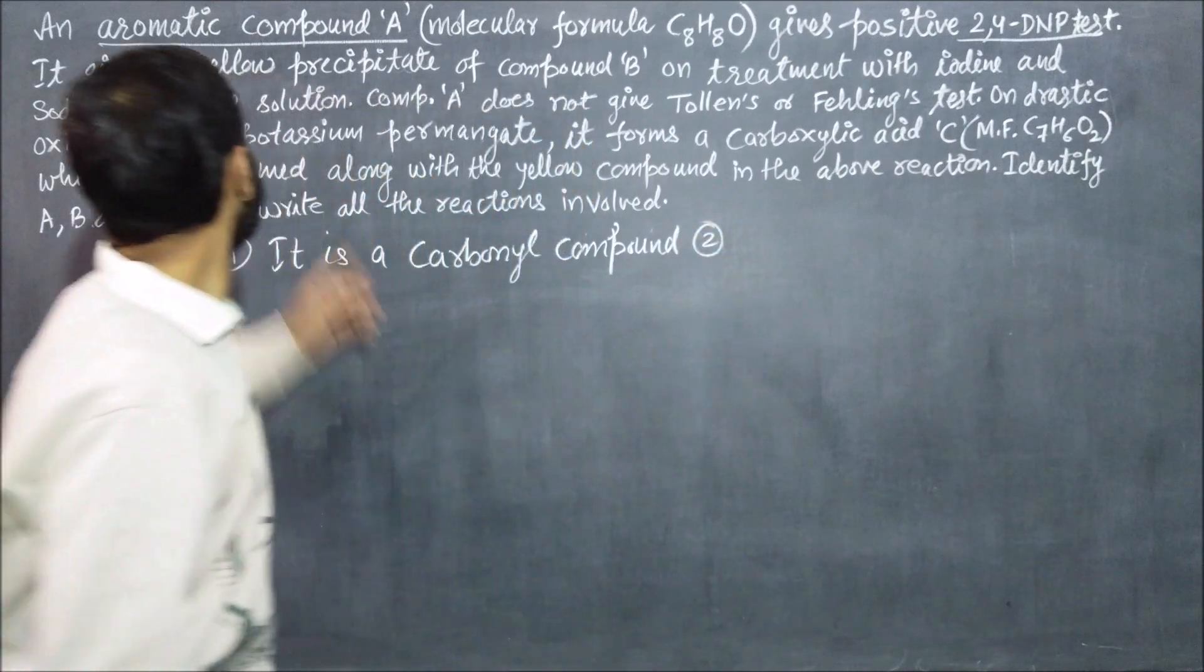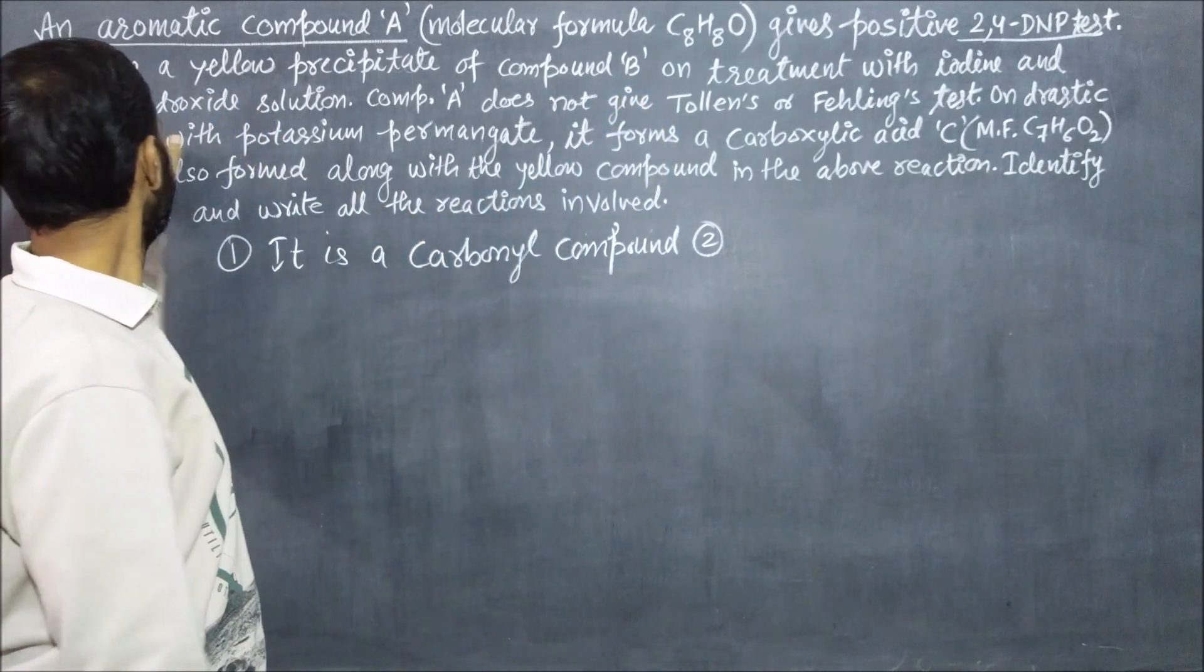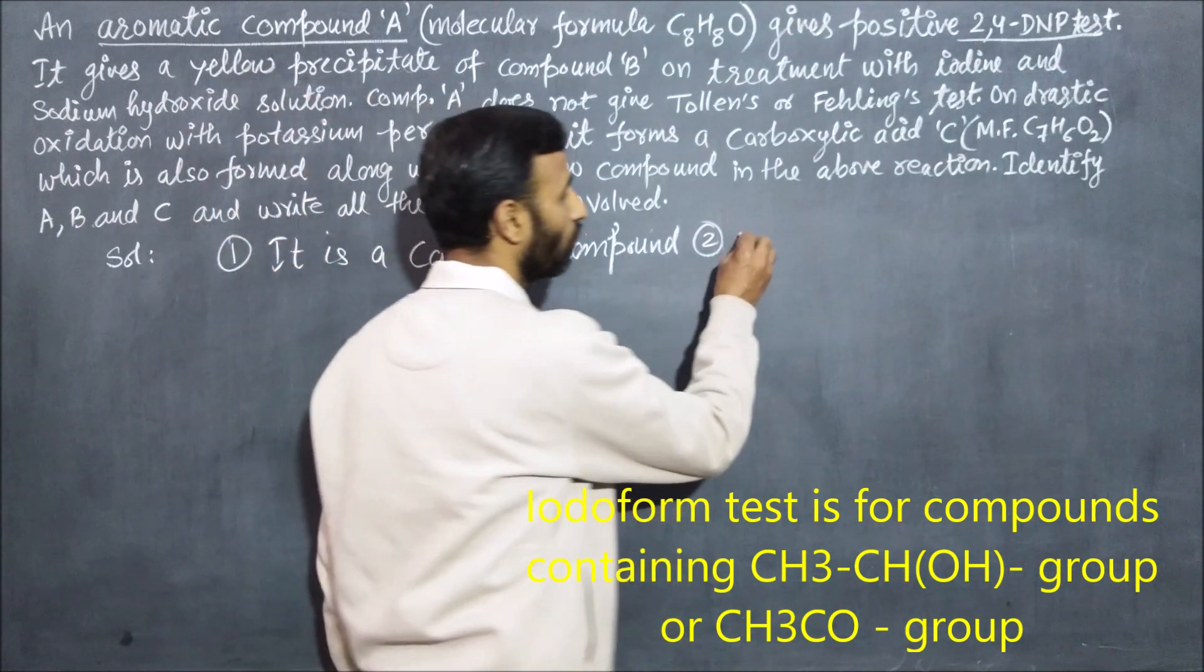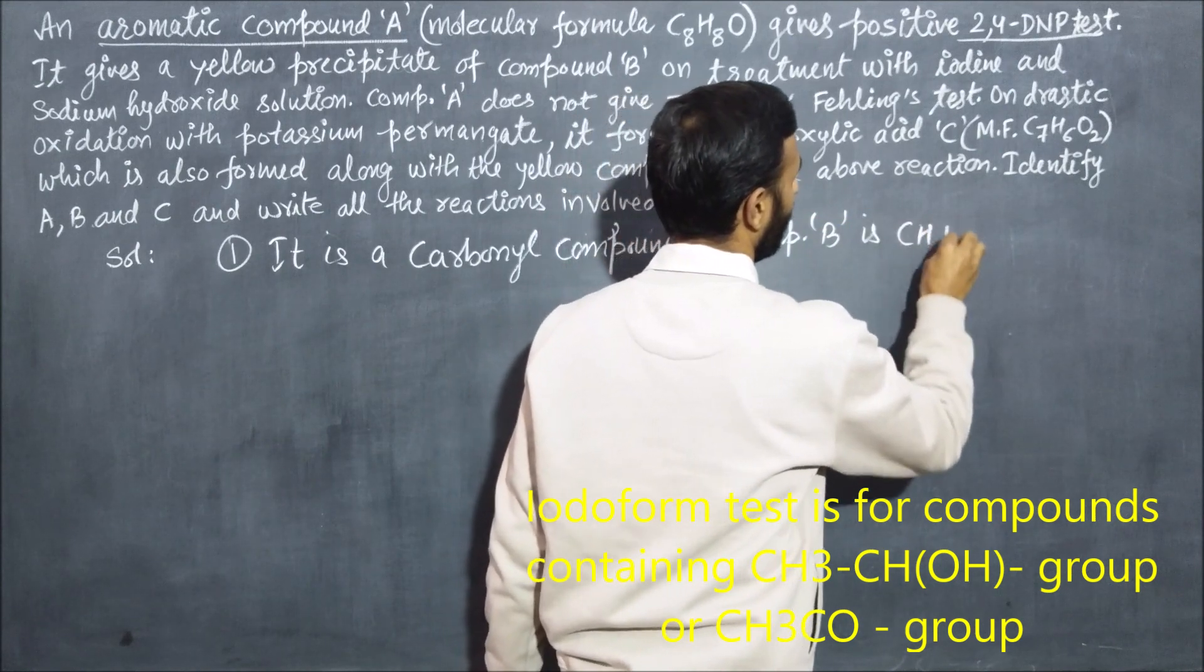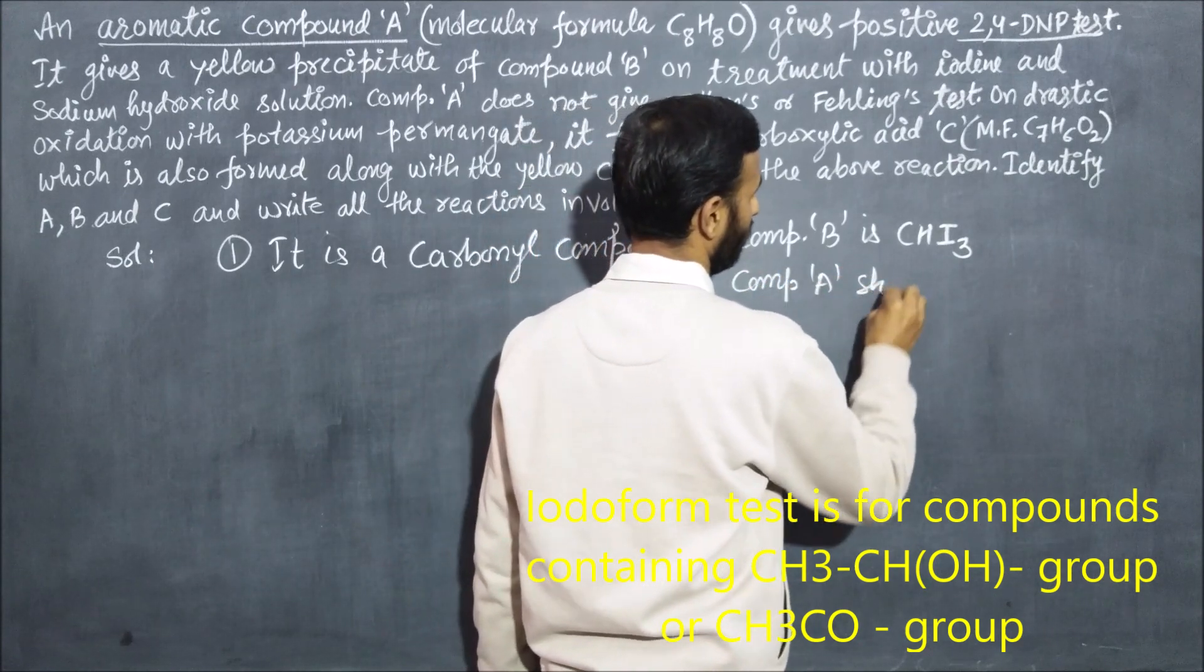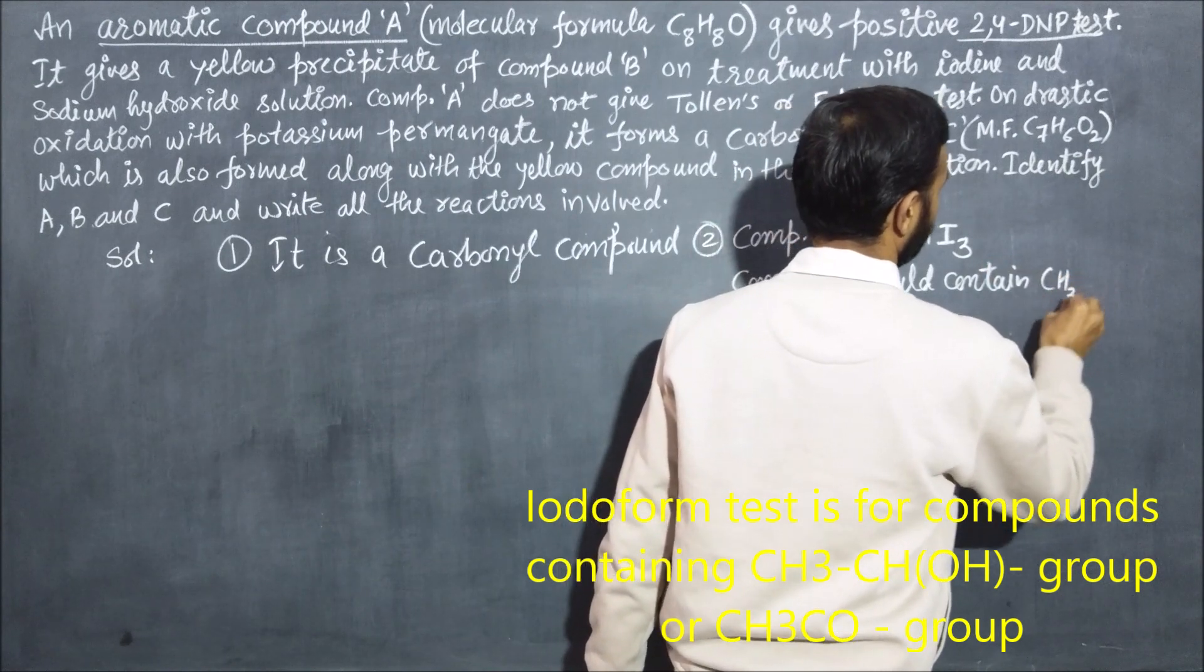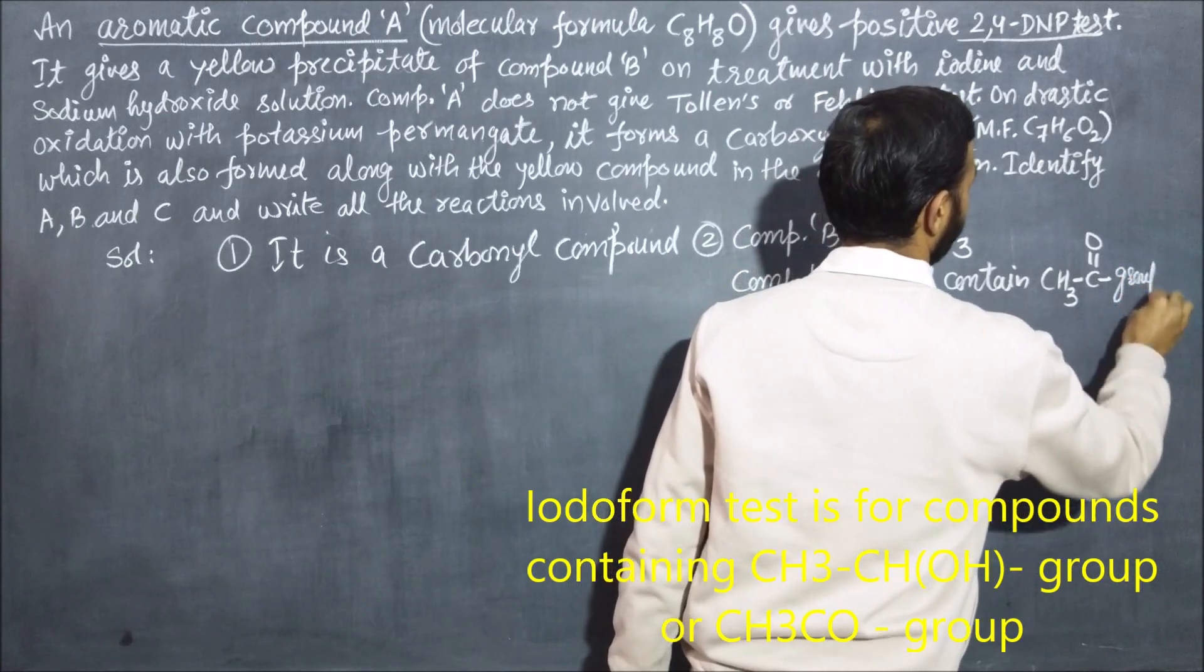It gives yellow precipitate of compound B on treatment with iodine and sodium hydroxide, so it gives iodoform test. In iodoform test, compound B should be iodoform and compound A should contain CH3CO group.